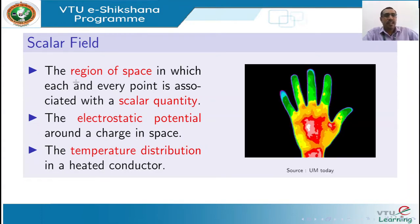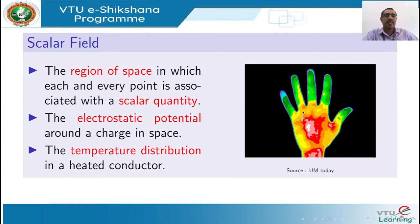For the sake of visualization, there is an image here — this is a thermal image of a hand. The different shades represent different temperatures. Each and every point in this hand is represented by a shade which in turn represents a particular temperature. This is how we can visualize a scalar field.